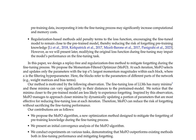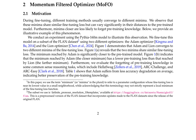The paper addresses the issue of forgetting pre-training knowledge during the fine-tuning process in LLMs. It highlights that incorporating pre-training data into the fine-tuning process can significantly increase computational and memory costs. Regularization-based methods, which add penalty terms to the loss function, may impair the model's performance on the fine-tuning task. The authors propose a replay-free and regularization-free method called MOFO to mitigate forgetting, which selects and updates only the parameters with the top alpha percent largest momentum magnitudes within each block at each iteration. This is motivated by the observation that the fine-tuning loss of LLMs has many minima that can vary significantly in their distances to the pre-trained model.